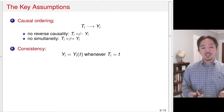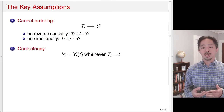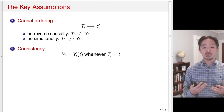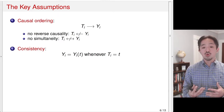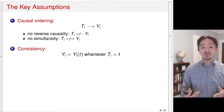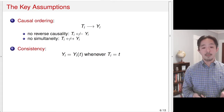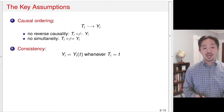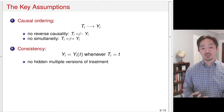The second assumption: we assume so-called consistency. That is, whenever the treatment takes some value — in the binary case either 0 or 1 — we observe y(1) or y(0). This assumption would be violated, for example, if there are hidden multiple versions of the treatment.